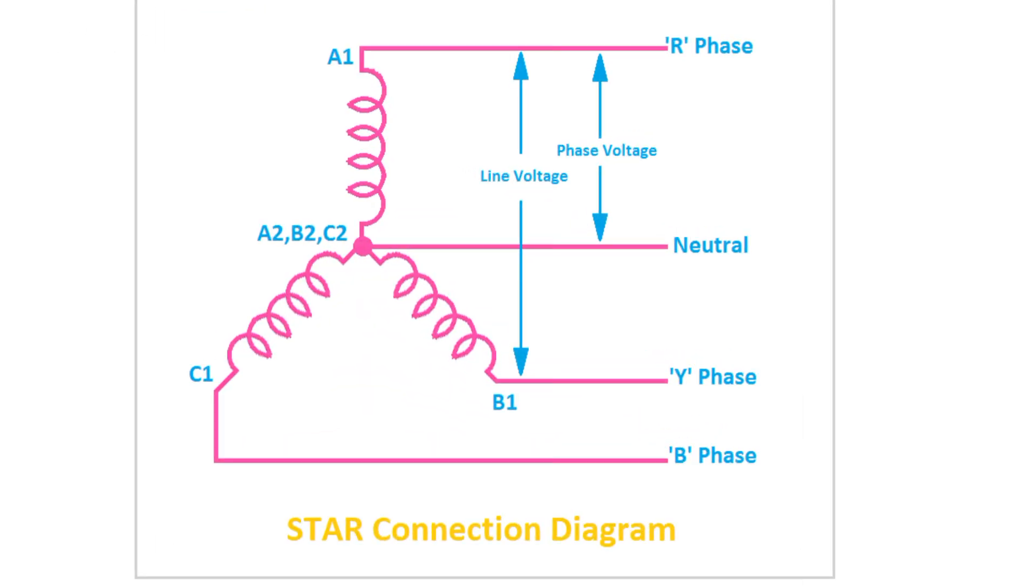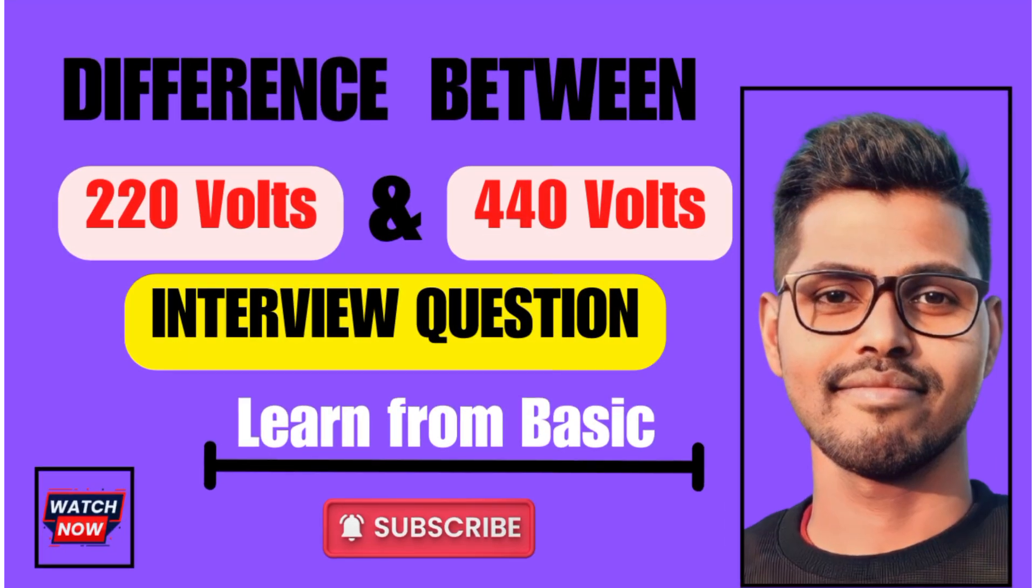220 volt is known as the phase voltage and 440 volt is known as the line voltage. This is the main basic information about 220 volt and 440 volt. See you in the next video, thanks for watching.